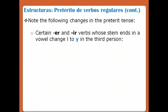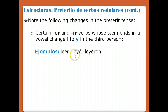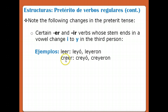Certain ER and IR verbs whose stem ends in a vowel change I to Y in the third person. For example, LEER — to read: in the third person, we would normally write L-E-I-O, but in Spanish you don't put three vowels next to each other, so we change the I to Y: leyó. Same for the plural: it would be L-E-I-E-R-O-N, but we change the I to Y: leyeron. CREER — to believe — works the same way: creyó, creyeron.